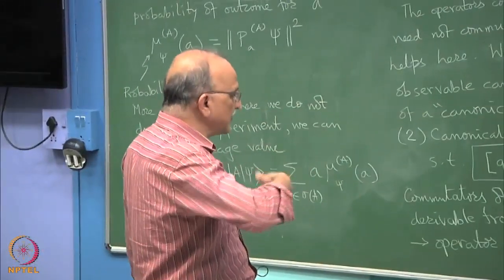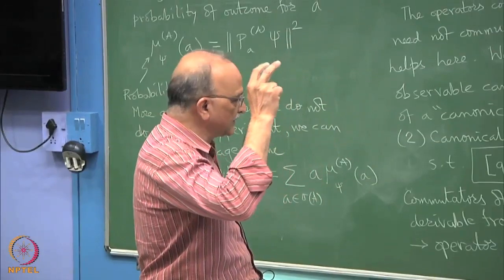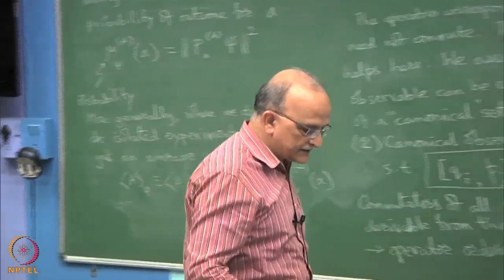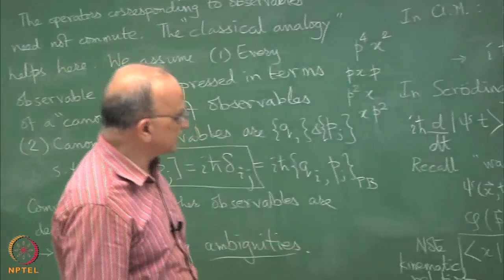If you can state that you may have infinite number of independent observables but if you can state their commutation relations then you have fixed the quantum system.